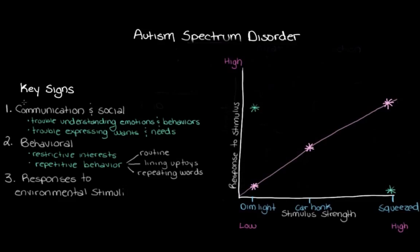Everything we've looked at here are not the only signs that someone might be on the autism spectrum, but hopefully you can now see that autism spectrum disorder is primarily a social interaction and communication disorder.